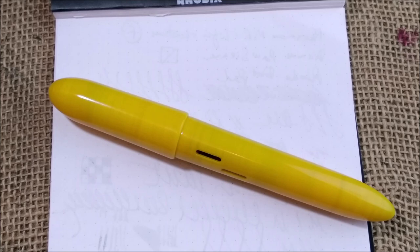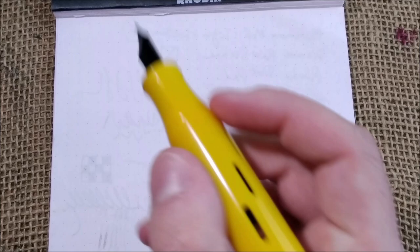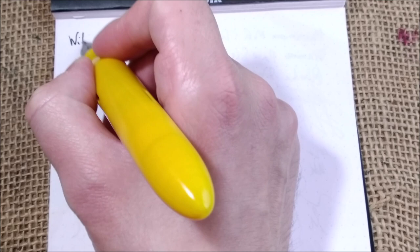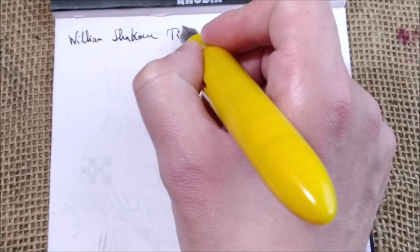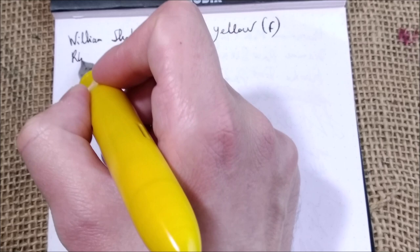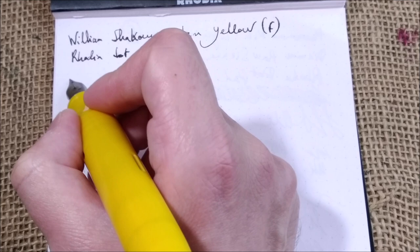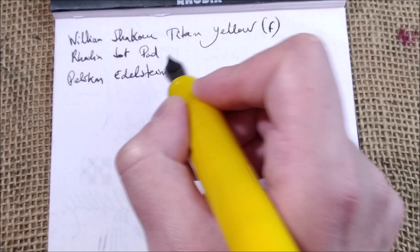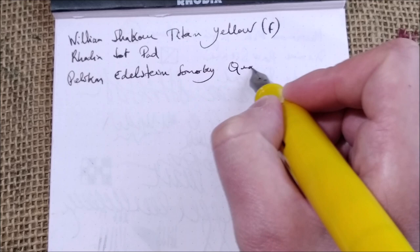Now let's see how it behaves on paper. And here we have pen and paper and let's start. The grip is perfect there's no step there, it's very comfortable to hold, no problem. So this is the William Shakur Titan Yellow with a fine titanium nib. And the paper is Rhodia pad. And the ink is the Pelikan Edelstein Smoky Quartz.